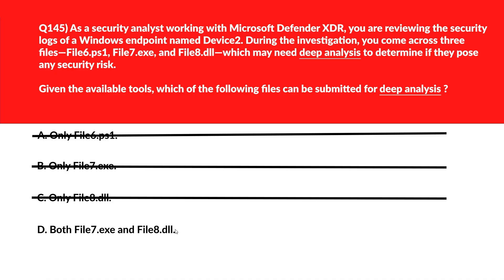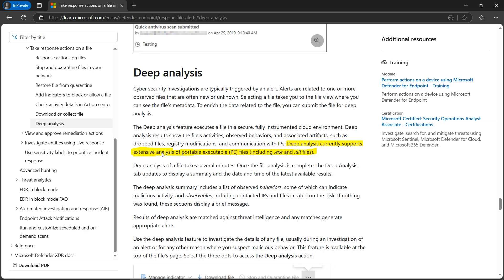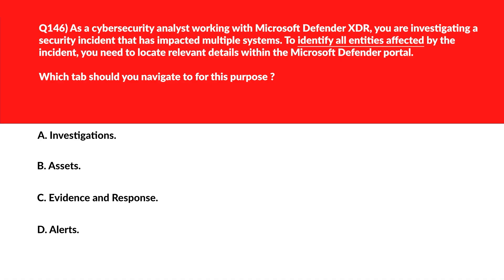Option D — exe and dll together. Executable and DLL files can both be submitted for deep analysis because Defender XDR evaluates them for potential security threats. Per official documentation, deep analysis currently supports extensive analysis of portable executable PE files including .exe and .dll files. Option D is the correct choice.